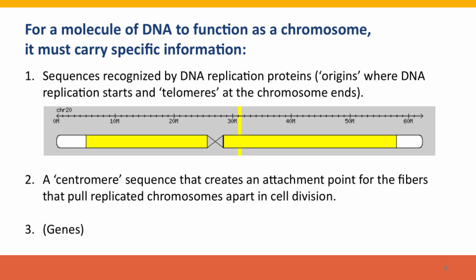If a molecule of DNA is going to function as a chromosome, it has to have particular properties — it has to carry specific information. First, it has to have signals that are recognized by DNA replication proteins. These signals are called origins of DNA replication, and there are usually multiple origins of replication along the length of a chromosome. Chromosomes also need special sequences for where DNA replication ends — at the ends of the chromosomes there are special sequences called telomeres, which exist because the ends of DNA molecules are harder to replicate than the internal parts.